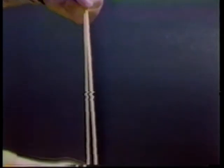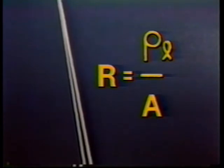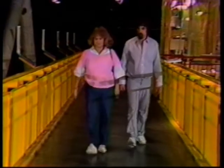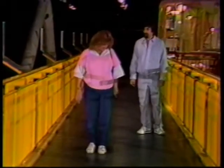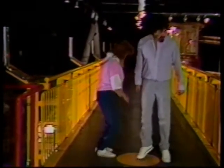When a material is stretched it usually gets thinner as well as longer. If the material is a wire, the change in length or thickness causes a change in resistance. This is the principle behind a strain gauge — a wire folded into a small square and mounted on the object under stress. When a bridge bends under load, the wire in the strain gauge stretches slightly, its resistance changes, and the changing current is detected by instruments.